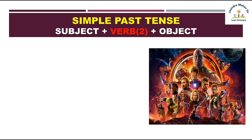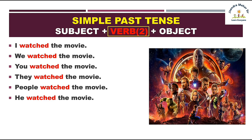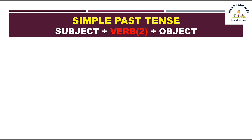Simple past tense mein zyada kuch nahi — subject aur object common hain, aur sirf hame wahan verb ka second form likhna hai. Toh dekhte hain kis tarah sentences bante hain har ek noun aur pronoun ke liye. Matlab koi bhi pronoun ho, koi bhi noun ho — sirf hame verb ka second form istamal karna hai. Previous tense ki tarah S/ES ka koi jhanjhat nahi.